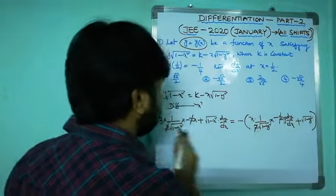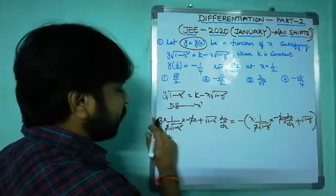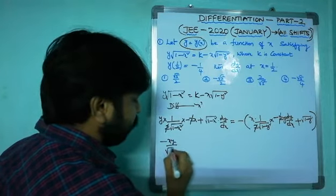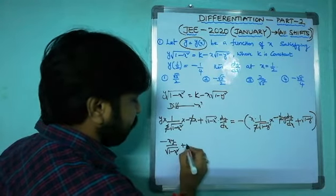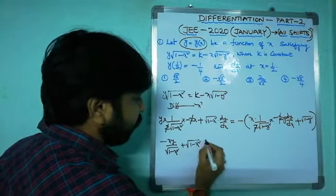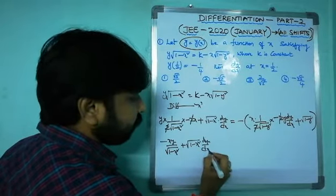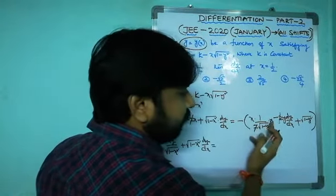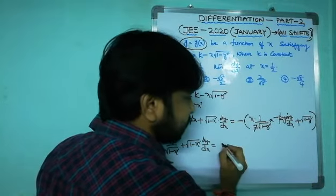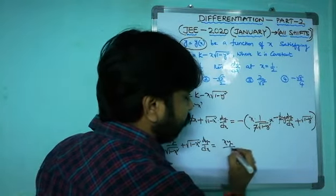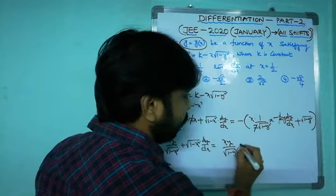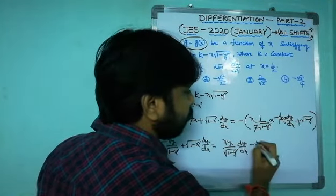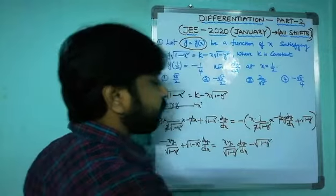After cancellation we get: -xy/√(1-x²) + √(1-x²)·dy/dx equals xy·(dy/dx)/√(1-y²) - √(1-y²). Applying the negative sign: √(1-x²)·dy/dx - xy·dy/dx/√(1-y²) = xy/√(1-x²) - √(1-y²).